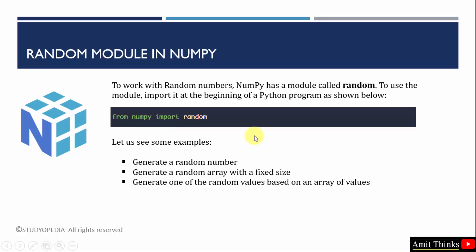In this video, we will see the following examples. First, we will generate a random number. Then we will generate a random array with a fixed size. And in the end, we will generate one of the random values based on an array of values.